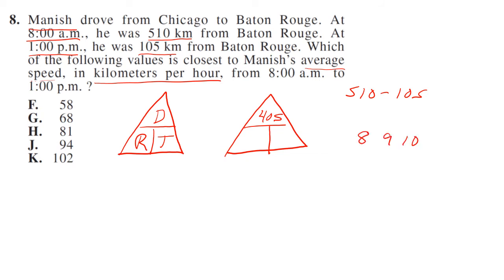8, 9, 10, 11, 12, 1, 2, 3, 4, 5 hours. So 5 hours is his time. Rate, 405 divided by 5 is 81, or choice H.